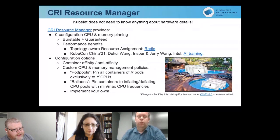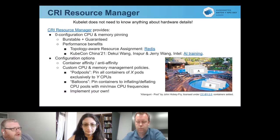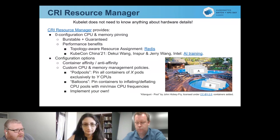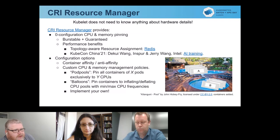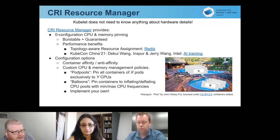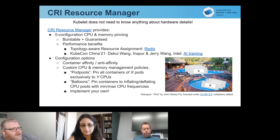Meanwhile, to validate all the ideas and see that what we are proposing actually works, we needed some solution — an intermediate step. That intermediate step is CRI Resource Manager. It works as a normal container runtime, so kubelet sees it as a container runtime — containerd, CRI-O, whatever. It's absolutely transparent to the kubelet. In the back end it still uses containerd or CRI-O, but it allows you to have a dedicated set of policies on how you are managing the resources.